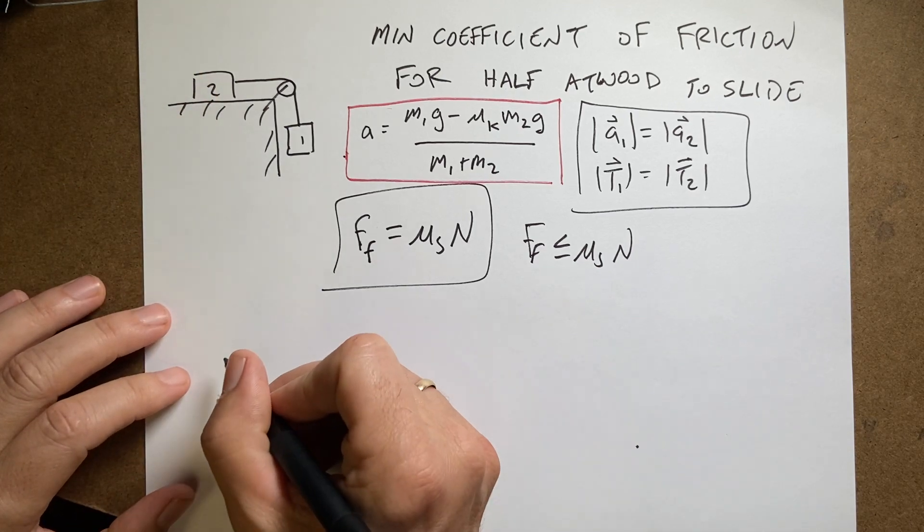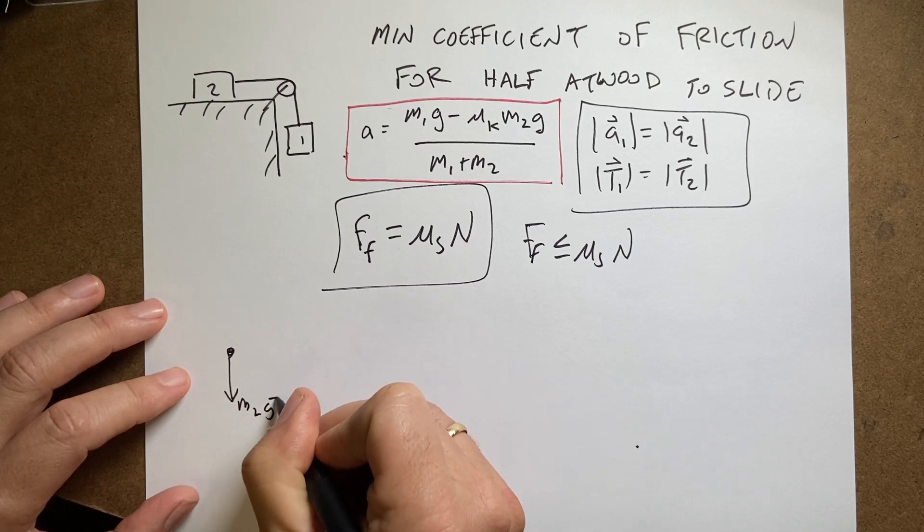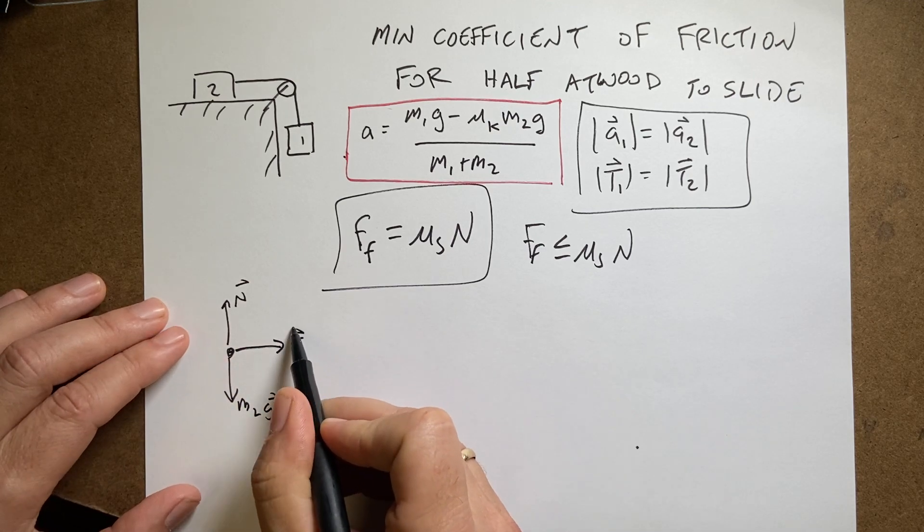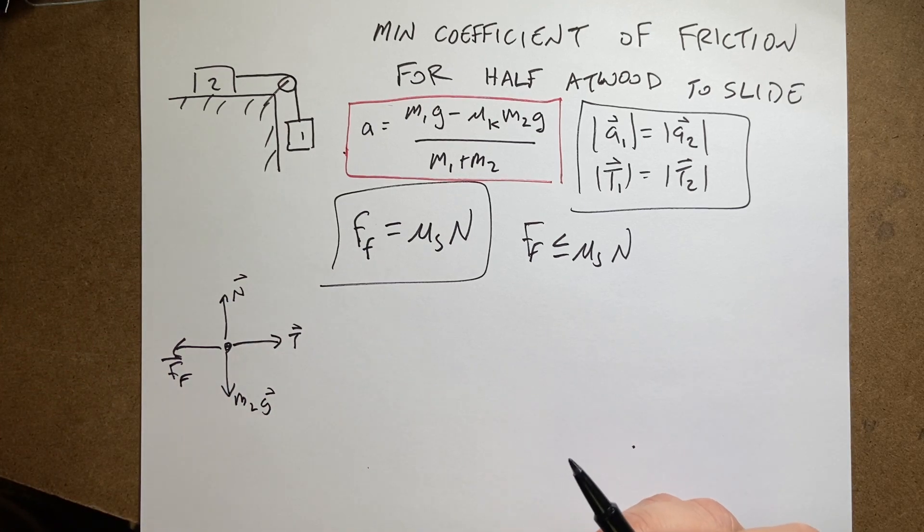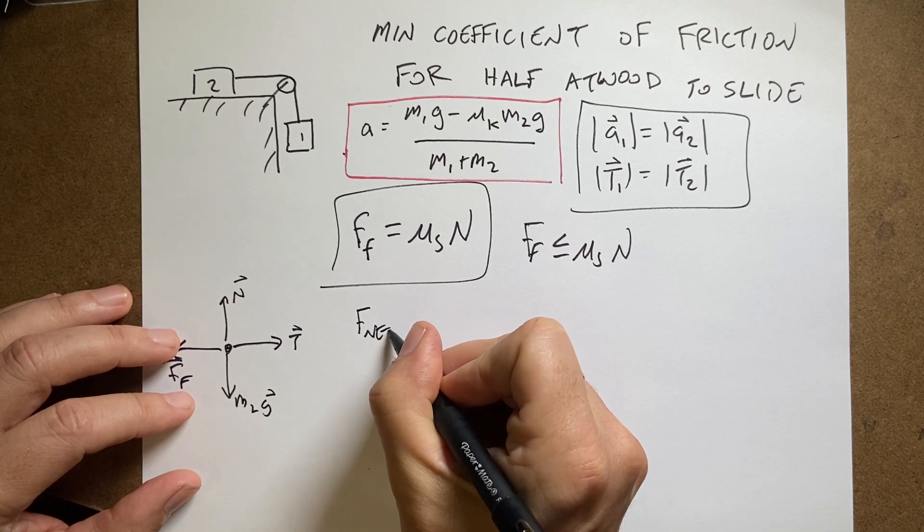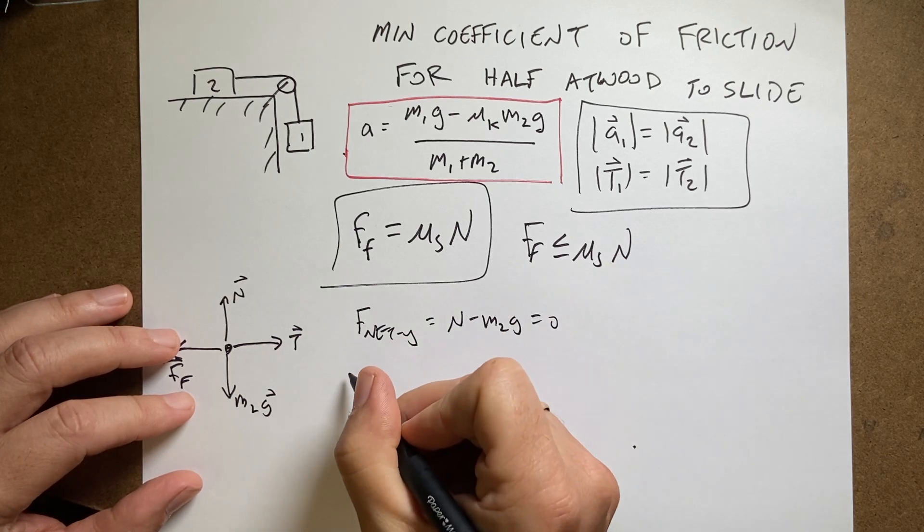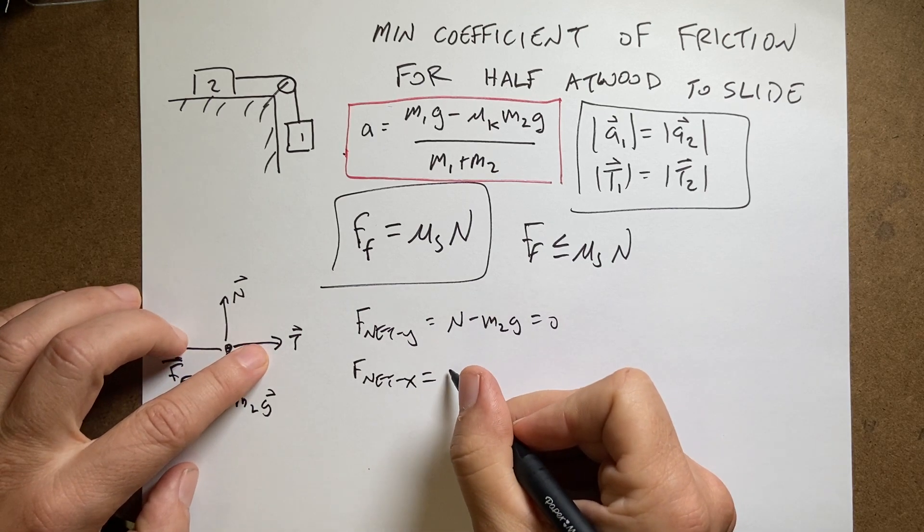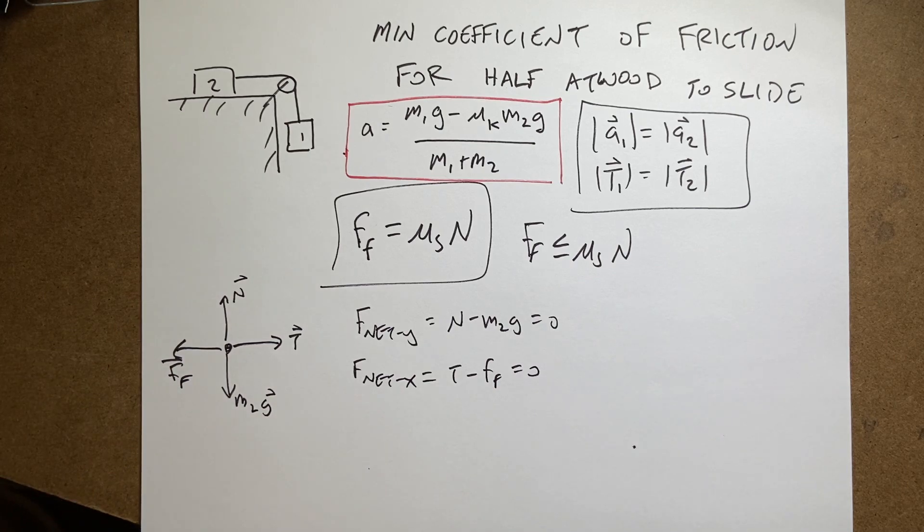Okay, I'm going to draw the force diagram for mass two. I have the gravitational force m2g pulling down, the normal force pushing up, the tension this way, and the friction force. I know that it's at rest because it's just when it starts to move. So I can say Fnet_y is N minus m2g equals zero, and Fnet_x equals T minus the frictional force equals zero. Those two things have to be true.